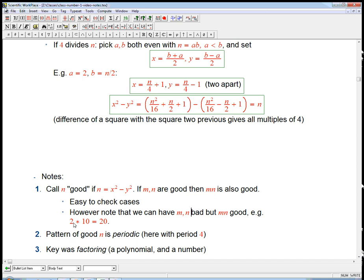But that we can have two bad numbers whose product is good. So if you look back at the table, 2 and 10 both have a remainder of 2 when you divide by 4.